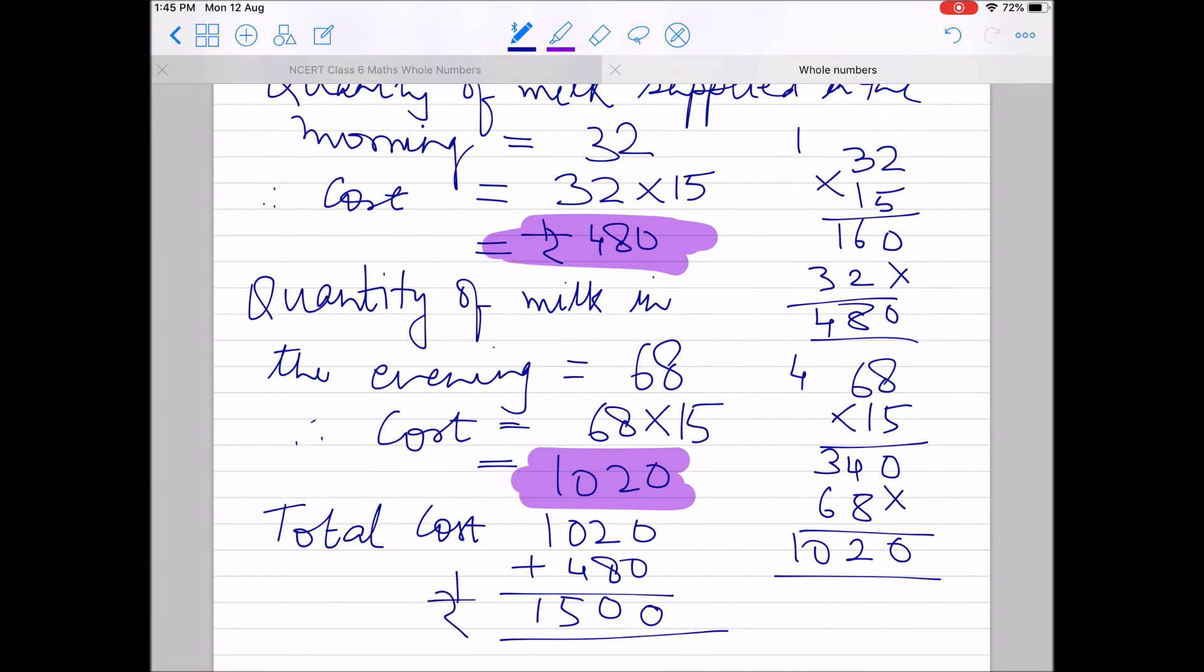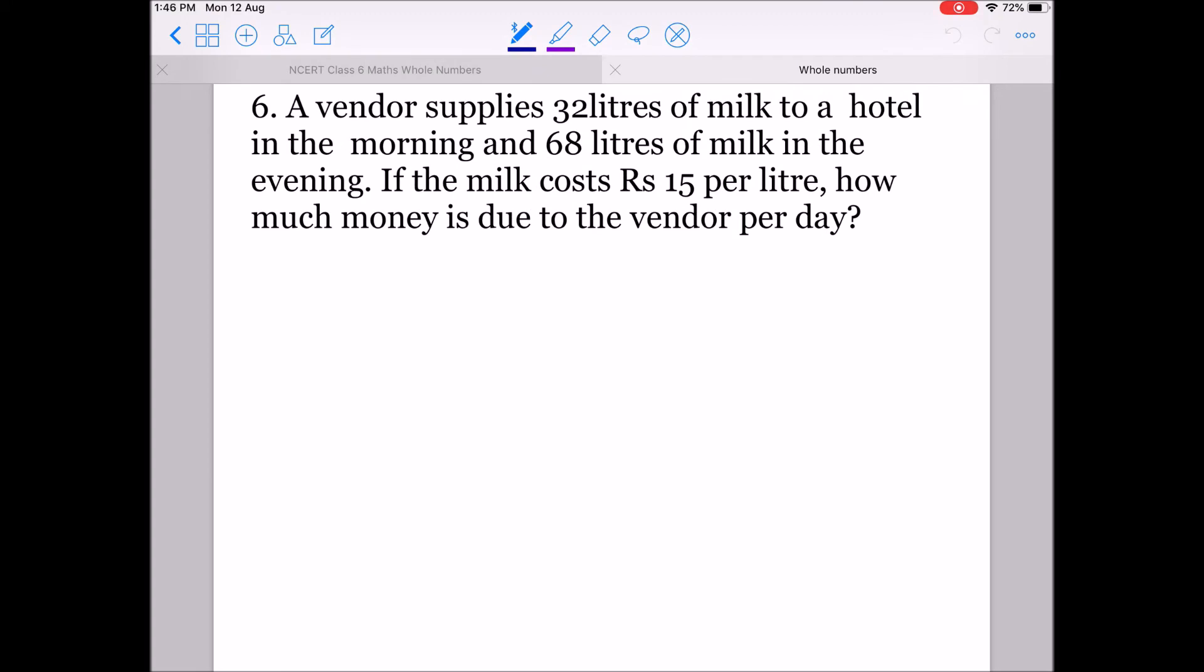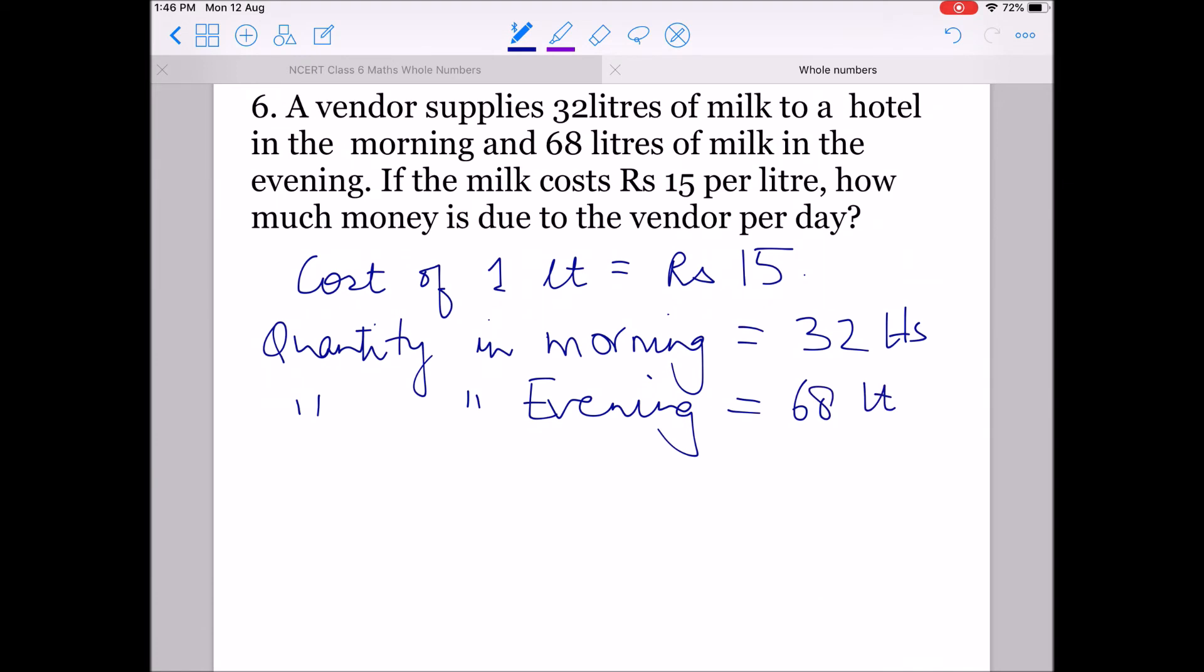Now we will do the same question with the distributive property and you will see how easy it becomes. Let's start again. What is the cost of one liter? We discussed it was 15 rupees, cost per liter. Now quantity in morning: 32 liters. And quantity in the evening, because it is taking two times: 68 liters.